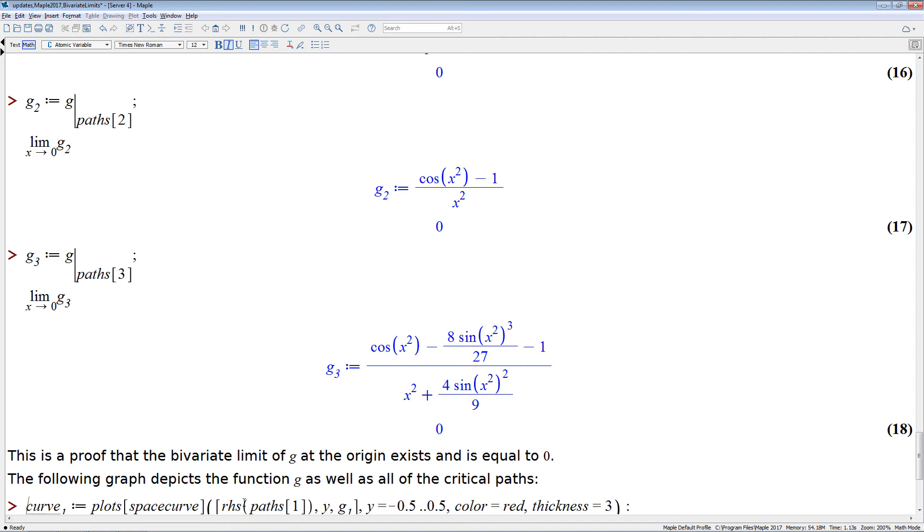So we have now found all the critical curves, all the solutions of the critical equation, so those are the critical curves, and we have computed the univariate limits along all those critical curves, and they're all identical, and so this is a proof that the limit actually exists and is equal to the value, the common value of all those critical curves.